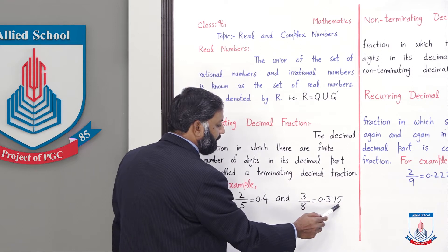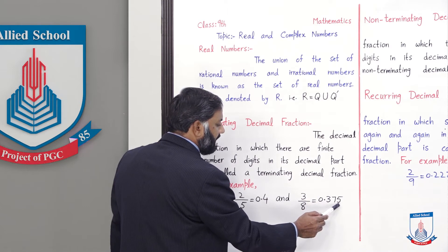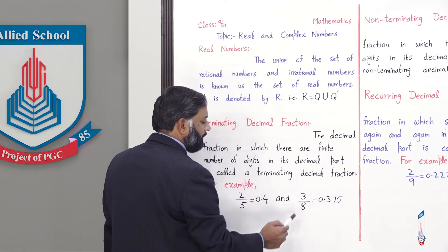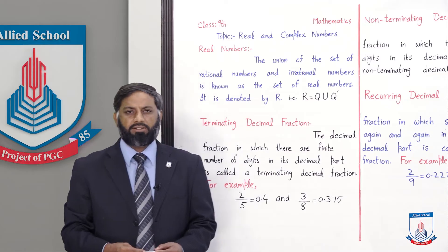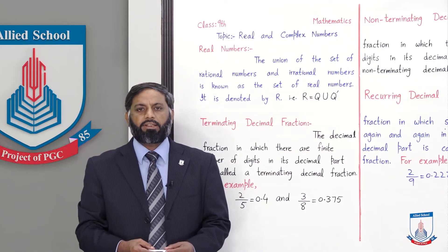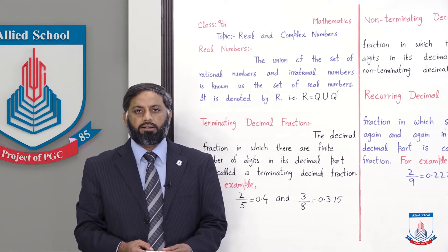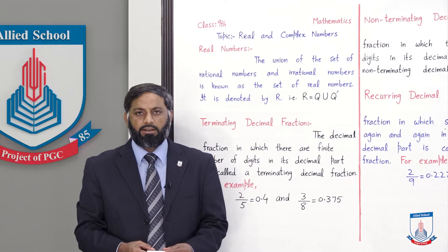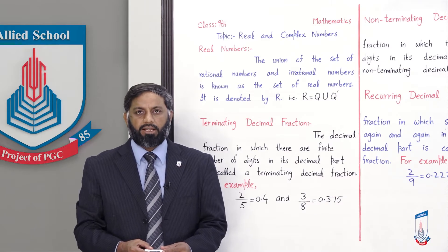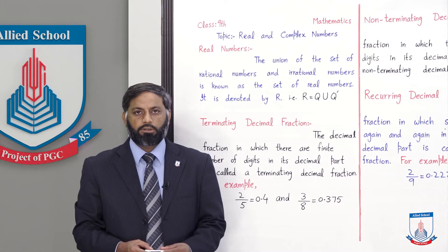اسی طرح 3/8 = 0.375 — اس کے decimal part میں 3 digits ہیں، یہ بھی finite ہے، لہذا یہ بھی terminating decimal fraction ہے۔ ایسی کوئی بھی fraction جسے divide کریں اور remainder 0 آ جائے، اور decimal part میں digits countable یعنی finite ہوں — وہ terminating decimal fraction کہلاتی ہے۔